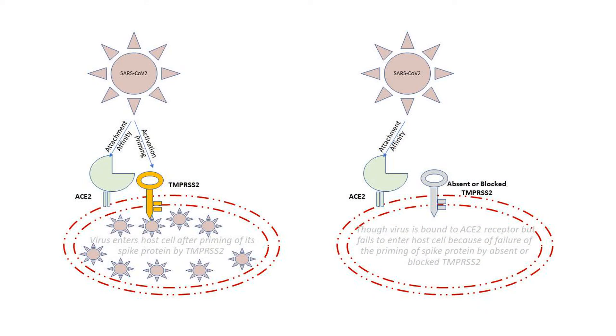As a simplification, for example, ACE2 is like a loyalty card of a hotel chain that attracts or binds customers to their specific group of hotels. But to enter the room of the hotel we still require a key, and that key in the SARS-CoV-2 infection is played by TMPRSS2, which primes the spike protein of the virus after ACE2 engagement.